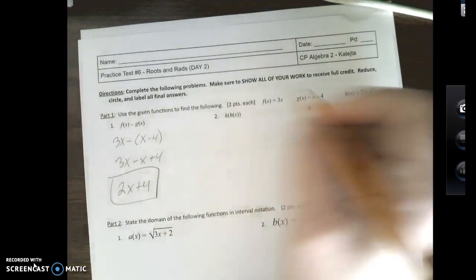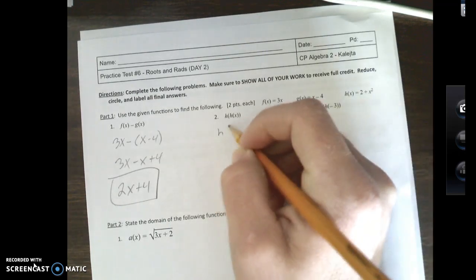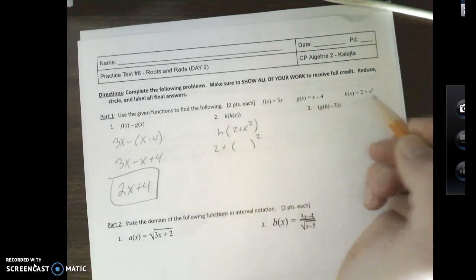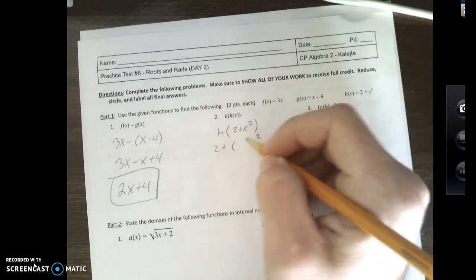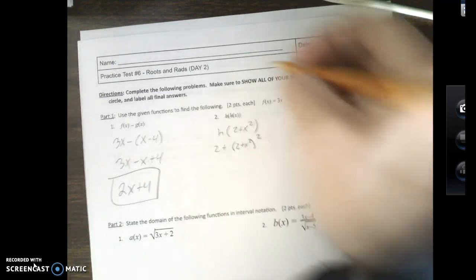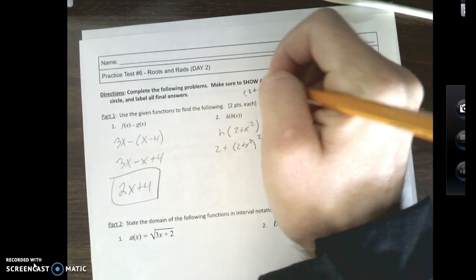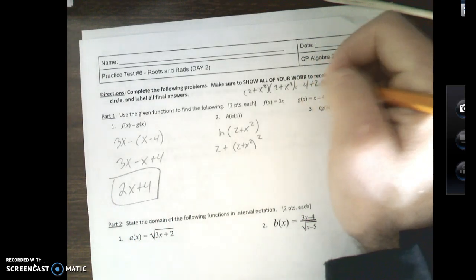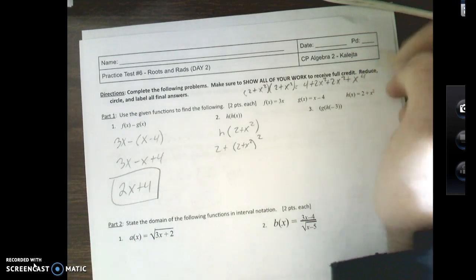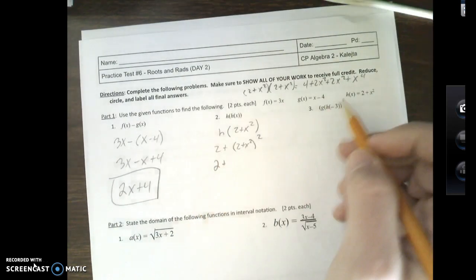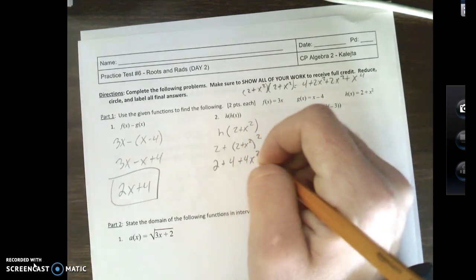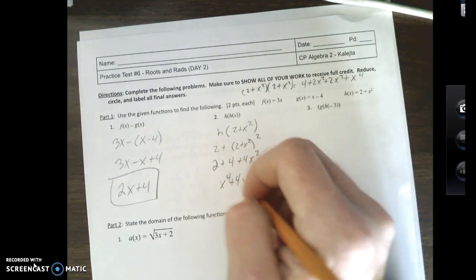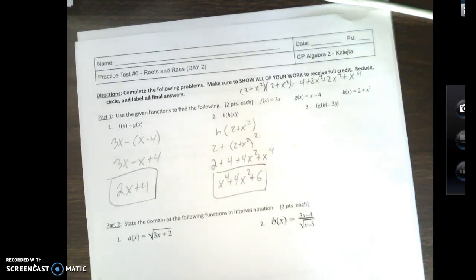Alright, h of h of x. I am putting h of x into itself. So h of 2 plus x squared. Now my h function is 2 plus something squared. The something squared that I'm going to put in there is the 2 plus x squared. Now, just to show you guys a little bit of side work up here, what you end up doing here is 2 plus x squared times 2 plus x squared. So it's going to be foiling. 2 times 2 is 4 plus 2x squared plus 2x squared plus x to the 4th. So if I combine the 2x squared together, I'm going to get 4x squared plus x to the 4th. If I write this in standard form then, x to the 4th plus 4x squared plus 6. There you go. So foiling is the tough part.